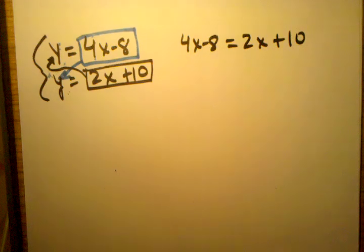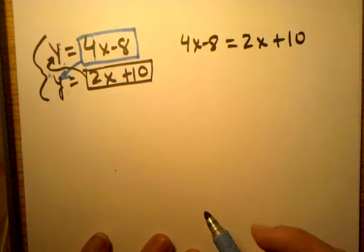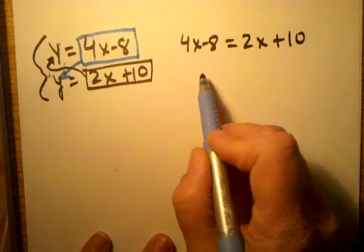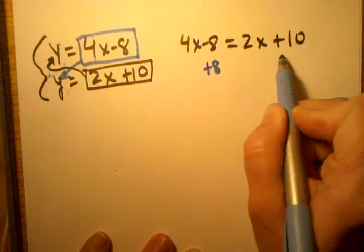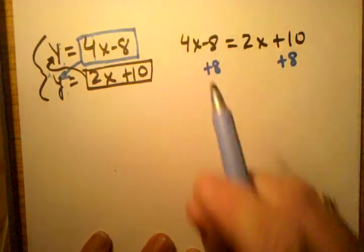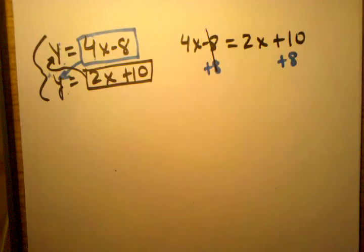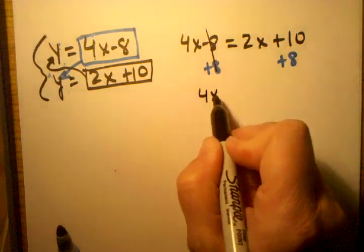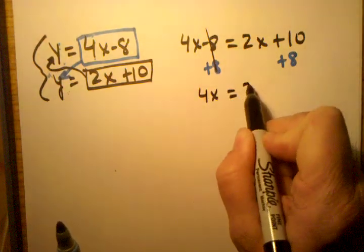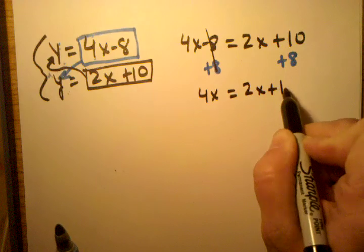Okay, so now all I need to do is use my balancing methods to solve for x. I'm going to start by adding 8 to both sides, because that will eliminate this 8 on this side when I do that. Getting my colors mixed up. So now I end up with 4x equals 2x plus 18.